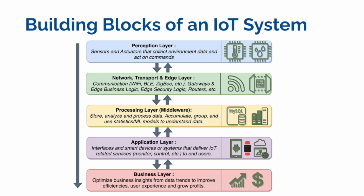There's also the network and transport layer — think of this as the communication layer. Wi-Fi, Bluetooth, or Zigbee connect IoT systems to a local gateway or to the cloud. You may need routers to send traffic to the cloud. There's also the processing layer — the middleware — which can exist locally on an edge device or on the cloud, where data is stored, analyzed, and processed. You can also run statistical or machine learning models to understand data and make decisions.